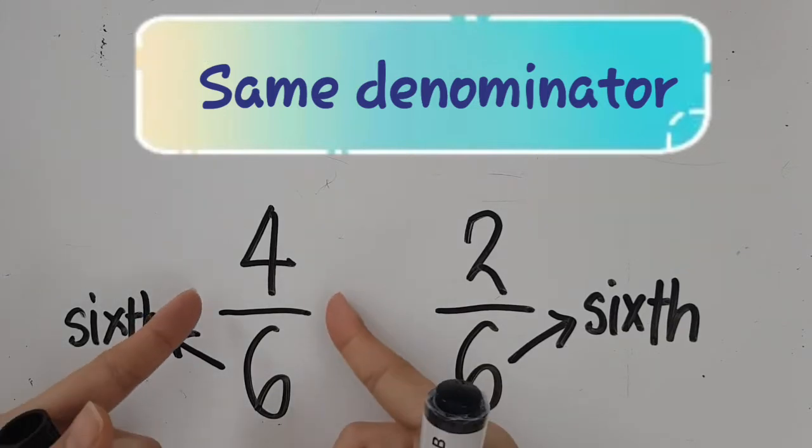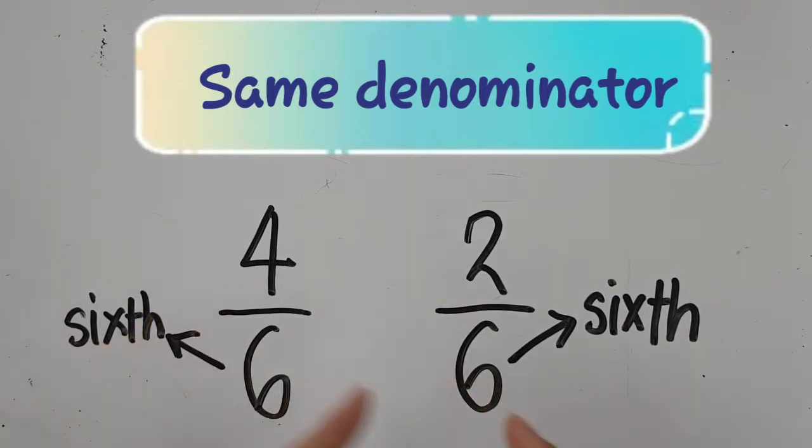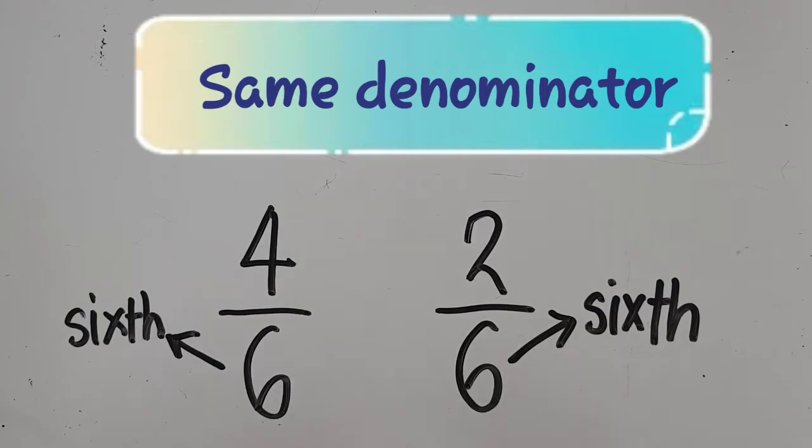So four-sixths is the bigger fraction, and two-sixths is the smaller fraction.